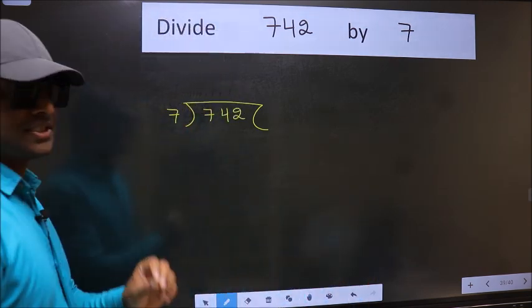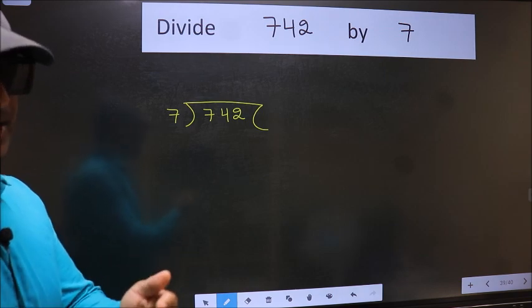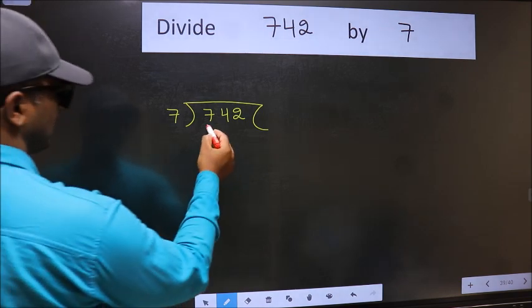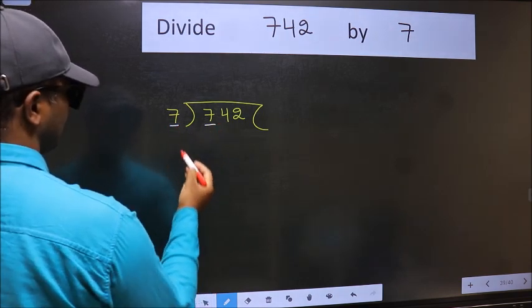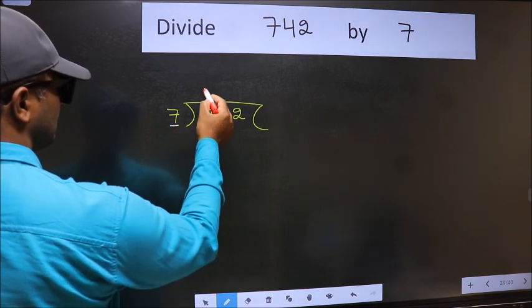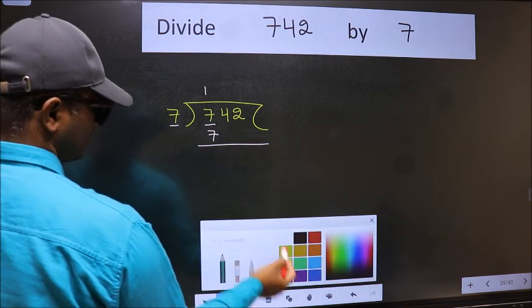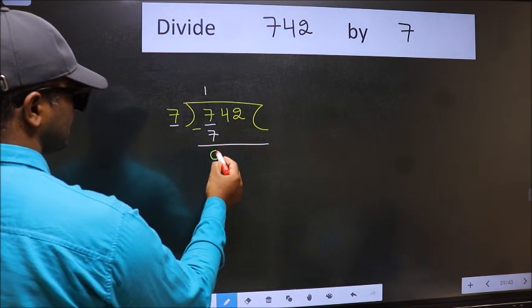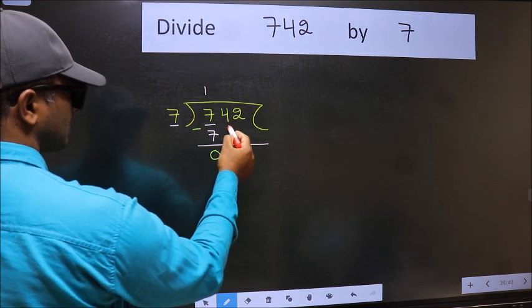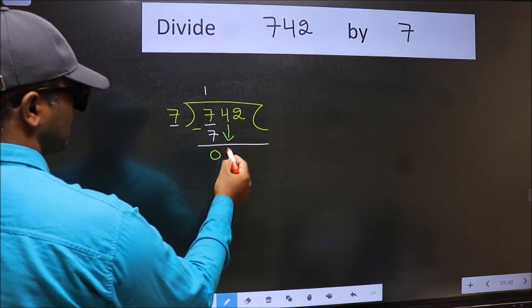This is your step one. Next, here we have 7 and 7 here. When do we get 7 in the 7 table? 7 ones are 7. Now we should subtract. We get zero. After this, bring down the beside number, so 4 down.